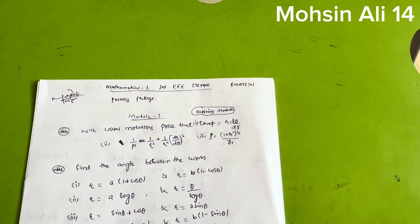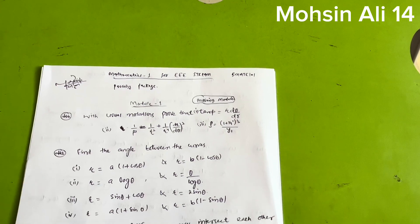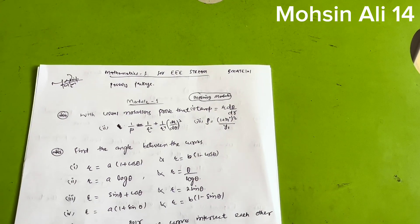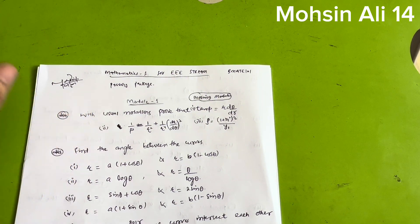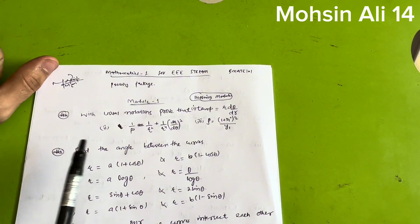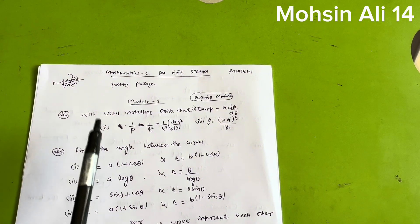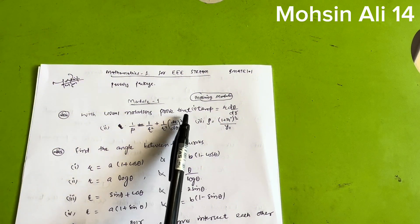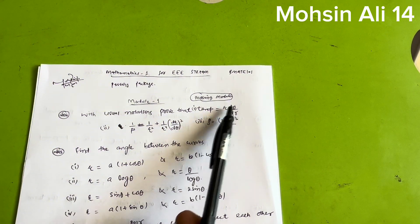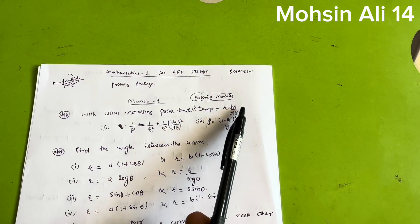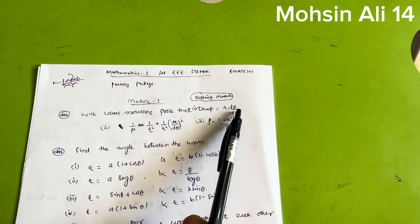If you are looking to pass the Mathematics subject, this video is for you. Let me discuss the passing modules. There are three passing modules which we will discuss first. Module one covers: with usual notations, prove that tan(ψ) = r·dθ/dr — this is a super important and most frequently asked question in VTU examinations.